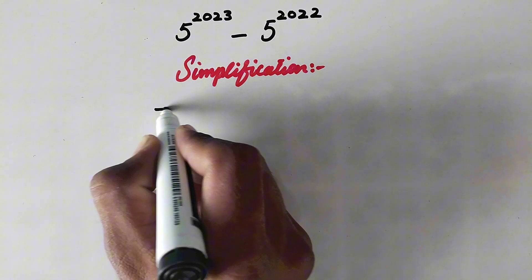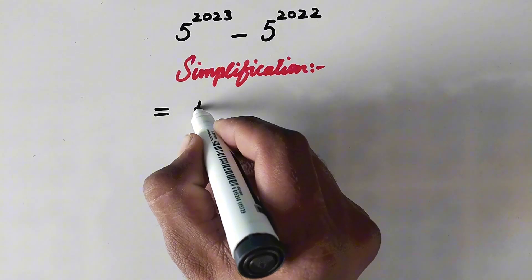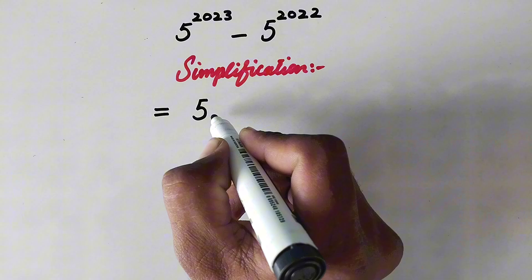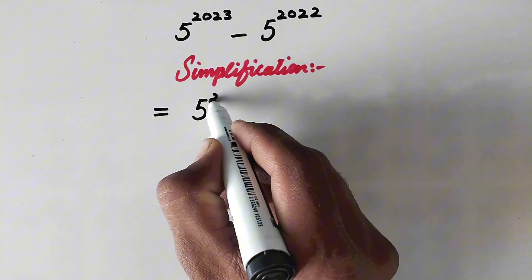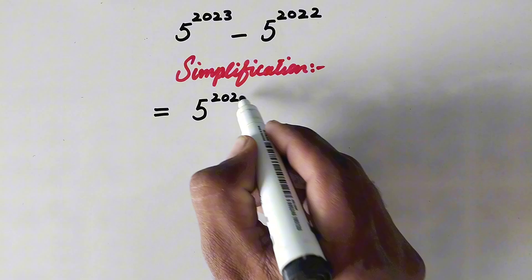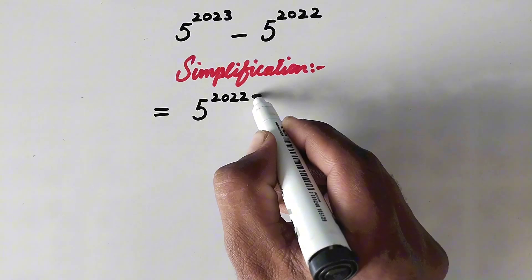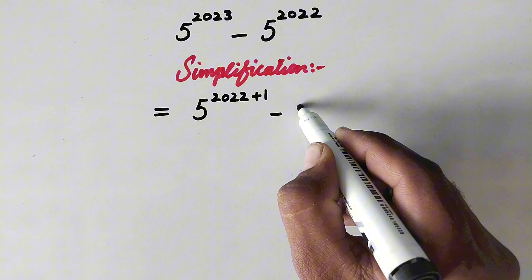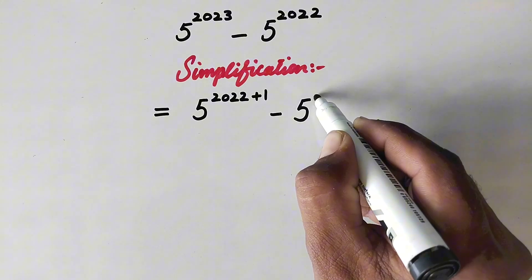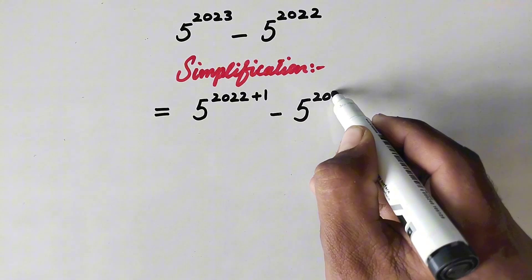So here in first step we will write it equal to 5 raised power, here we will separate this power 2023 in this way: 2022 plus 1, minus 5 raised power 2022.